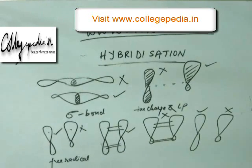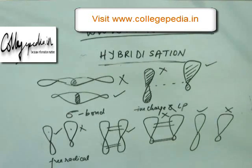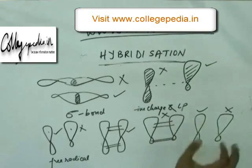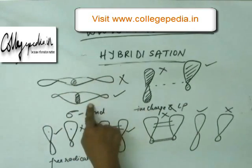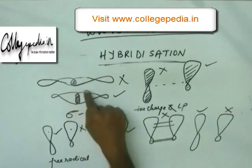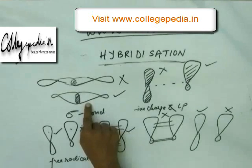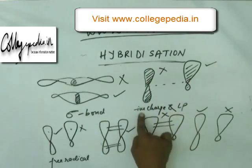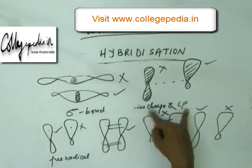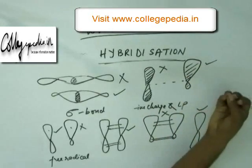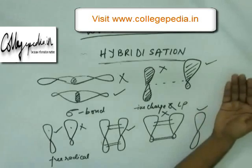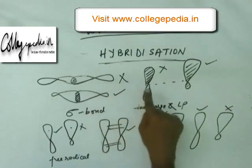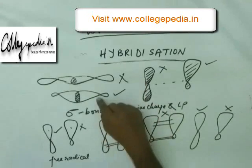Let's summarize the important points on hybridization. We considered six cases. The first case is sigma bonds - either head-on overlapping by pure orbital or by hybridized orbital. In case of hybridized orbital the overlapping region is greater, so the sigma bond is stronger and is formed by hybridized orbital. Also, if you need to hold electrons for a negative charge or a lone pair, we keep those two electrons in a hybridized orbital to minimize inter-electronic repulsion. So for sigma bond, lone pair, and negative charge, hybridized orbital is used.